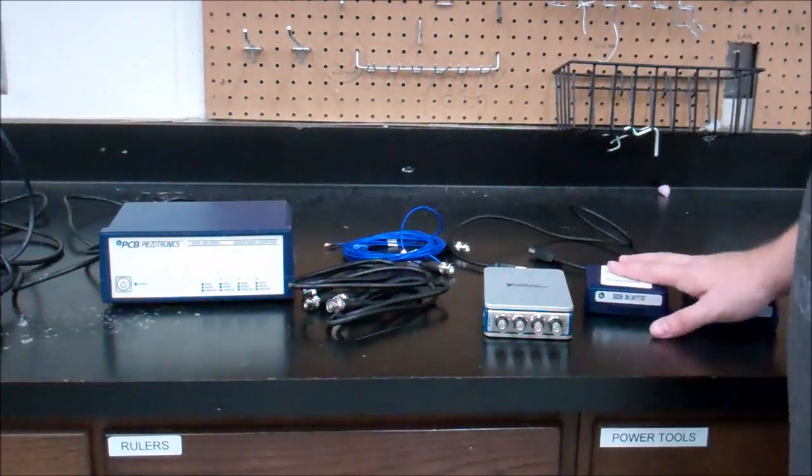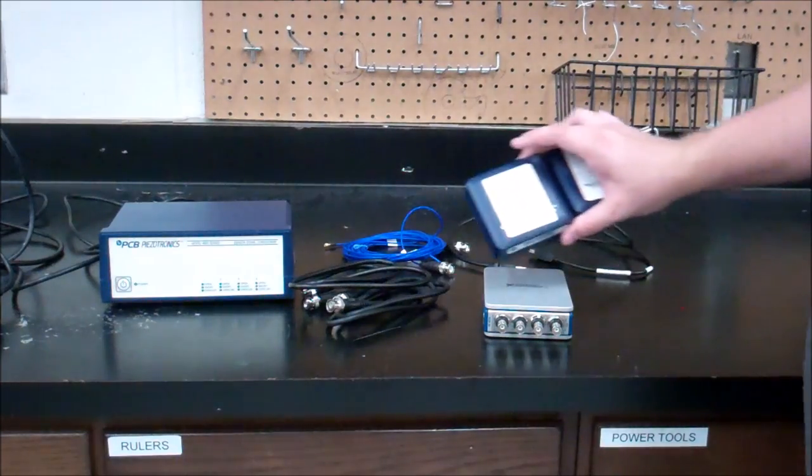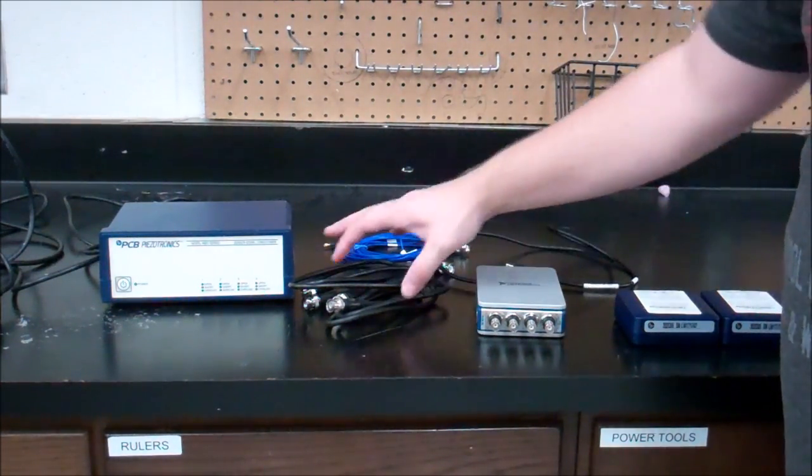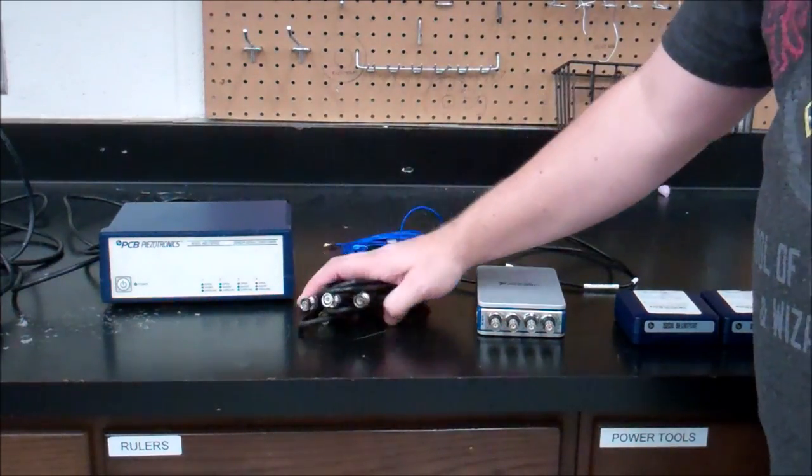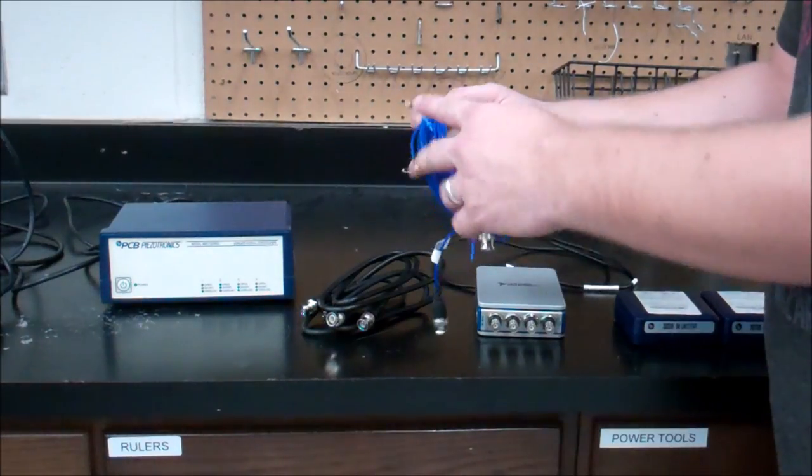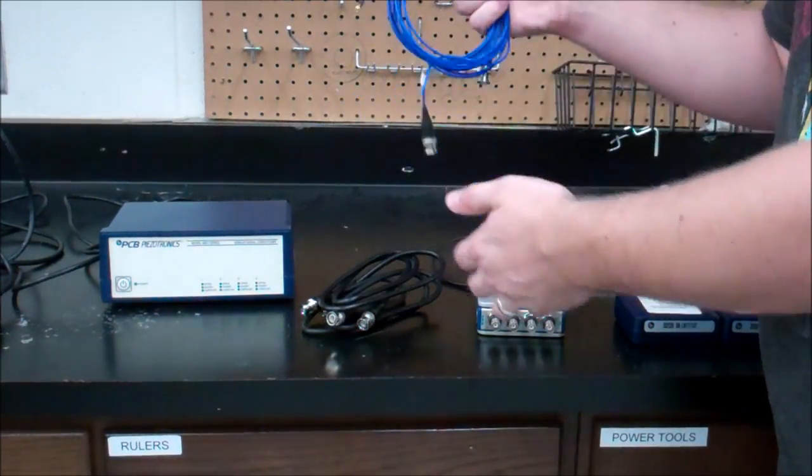Today we're going to learn how to use accelerometers. You have two accelerometers here, you're going to need your DAC, your cable for your DAC, two BNC to BNC cables, then a connector to the accelerometer to BNC, they're the blue wires.